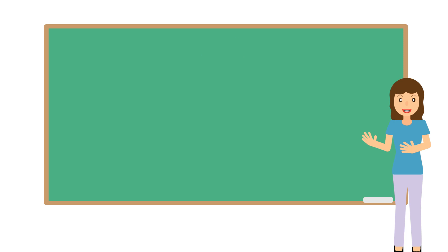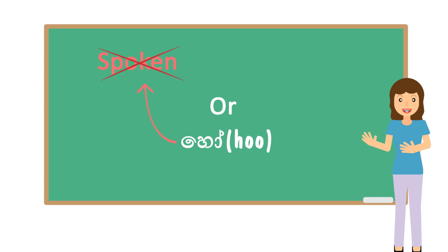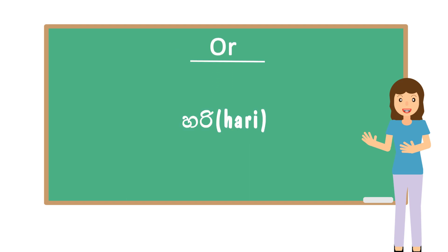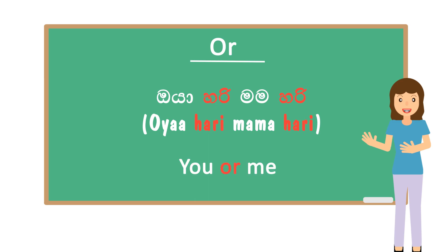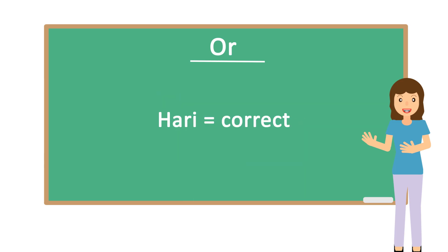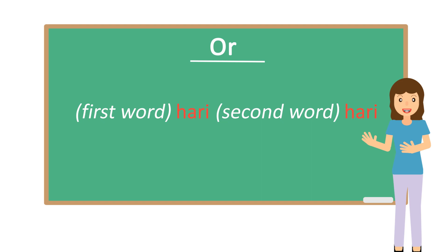The fourth word for this lesson is the translation for OR. If you have seen the translation for OR as HO, remember it's the same as SAH — we don't use them in normal conversations. The casual way to say OR is: simply add the word HARI after each word that connects with OR. As an example, 'OYA HARI, MAMA HARI' means 'you or me.' But remember the word HARI also means 'correct.' So to use the word OR, use this structure: first word HARI, next word again HARI. You can use this structure only if it is a statement.